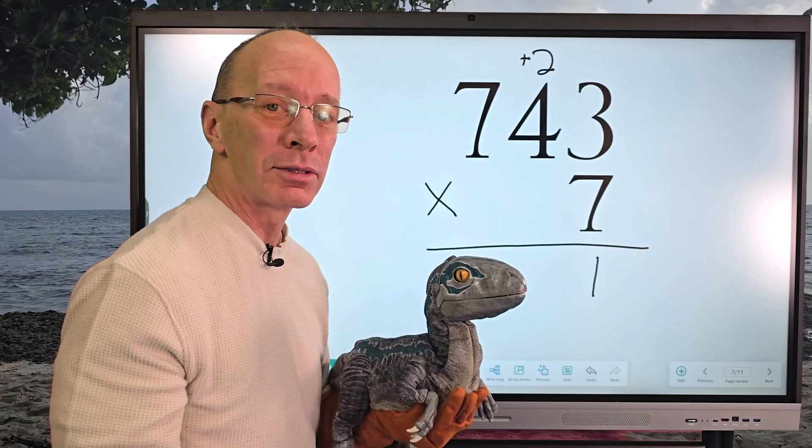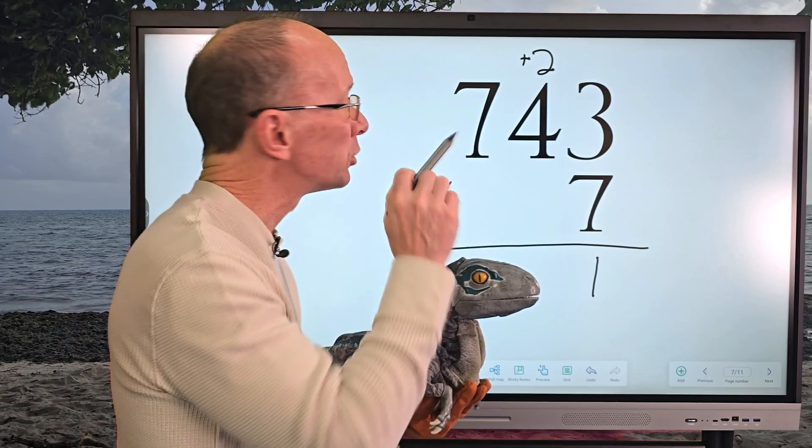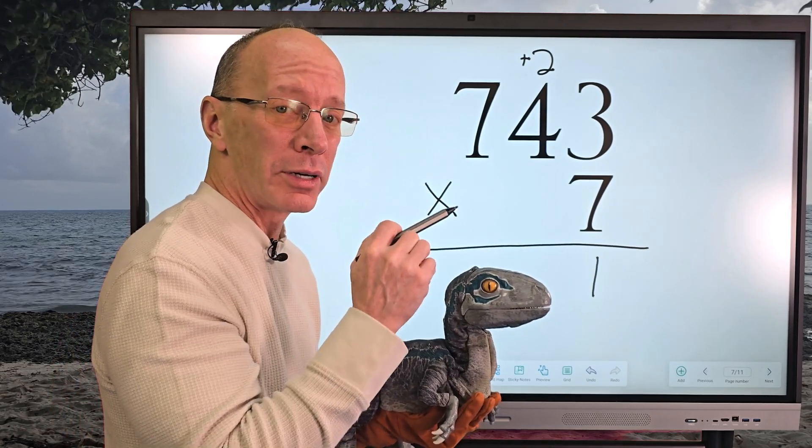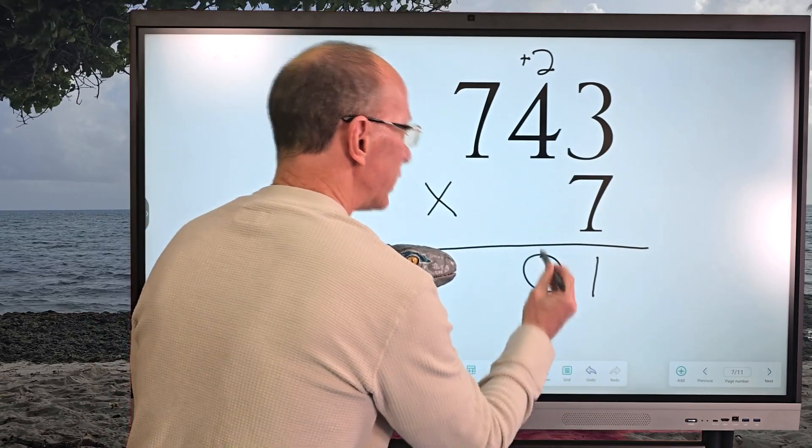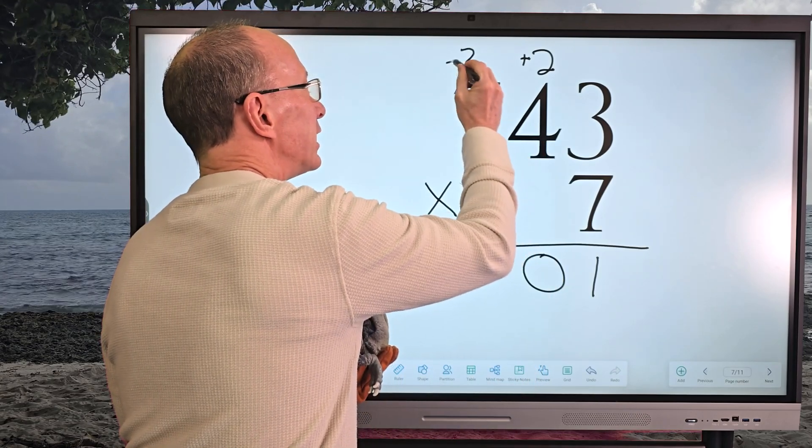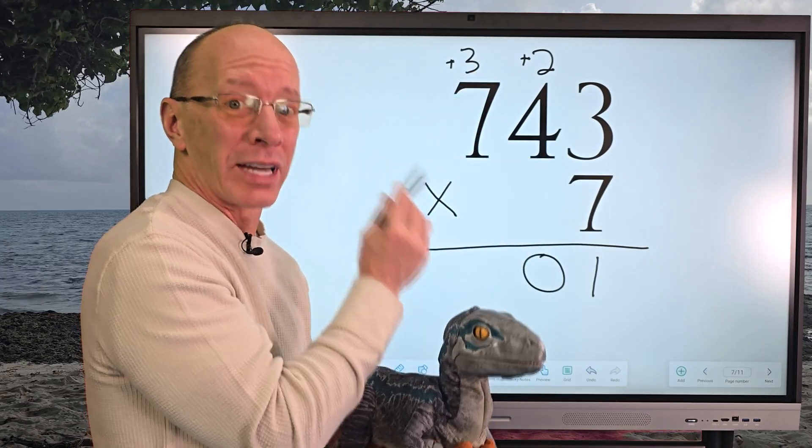And do you know what I'm going to say? We're going to add that in a little bit—not yet, but in a little bit. So now I'm going to take seven times seven. Seven times seven is forty-nine. Forty-nine, fifty, fifty-one, fifty-two. So I put fifty-two right here.